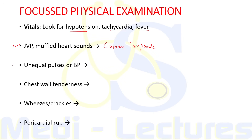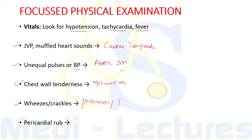Unequal pulses or unequal BP in both arms is suggestive of aortic dissection as the cause of acute chest pain. Chest wall tenderness is present in musculoskeletal causes like costochondritis. Wheezes or crackles can be heard in pneumonia or pulmonary embolism. Pericardial rub can be heard in pericarditis.